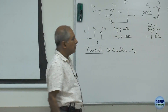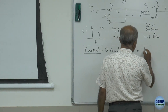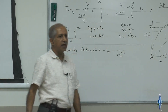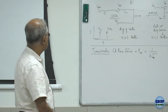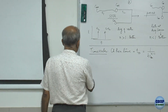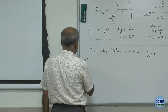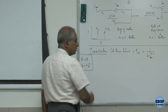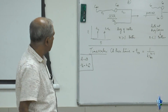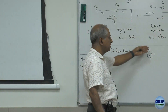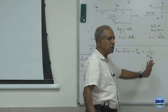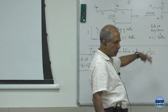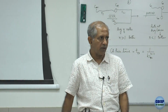For a nth order reaction, for A going to B where minus RA is K CA to the power n, we define the characteristic reaction time as 1 over (K CA0^(n−1)). The quantity K CA0^(n−1) has units of reciprocal time, so its reciprocal has units of time.